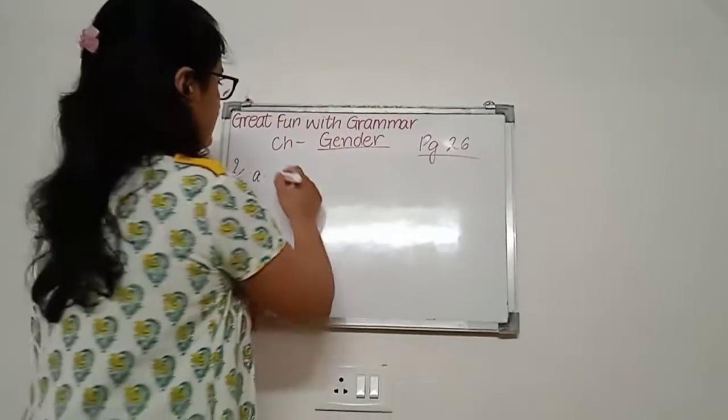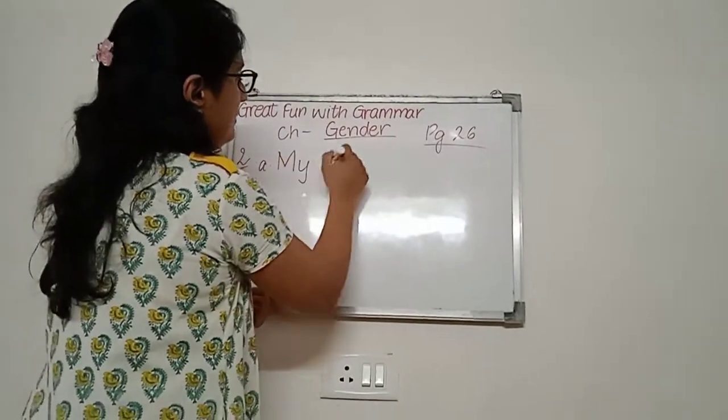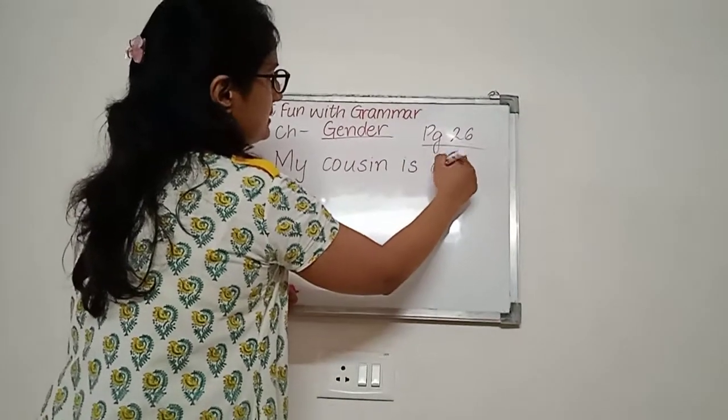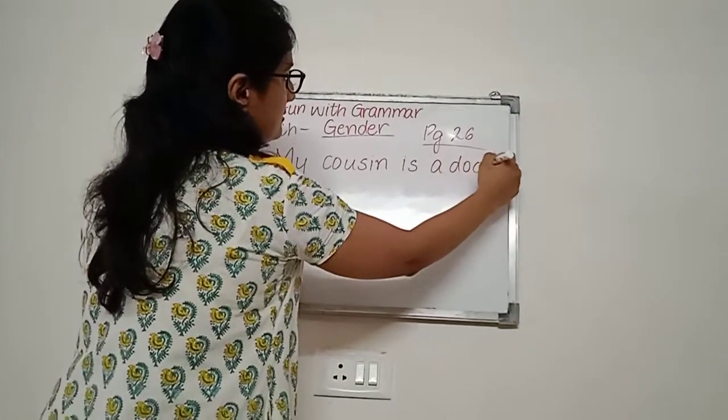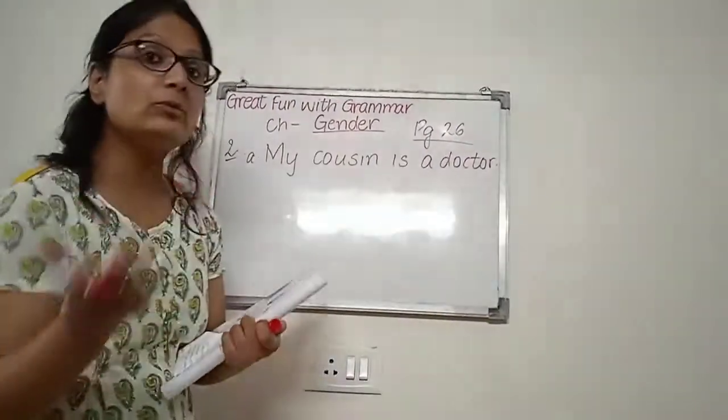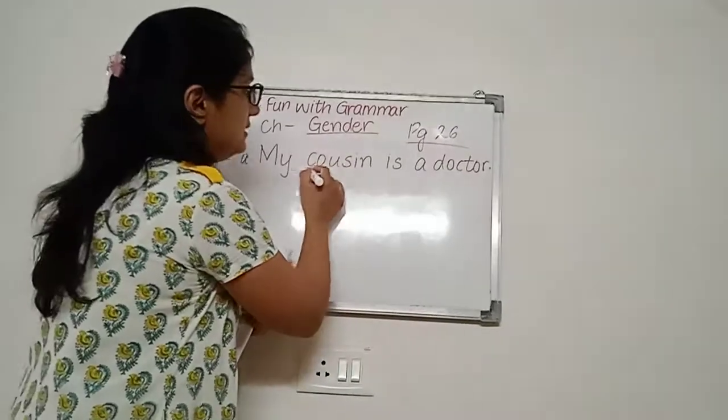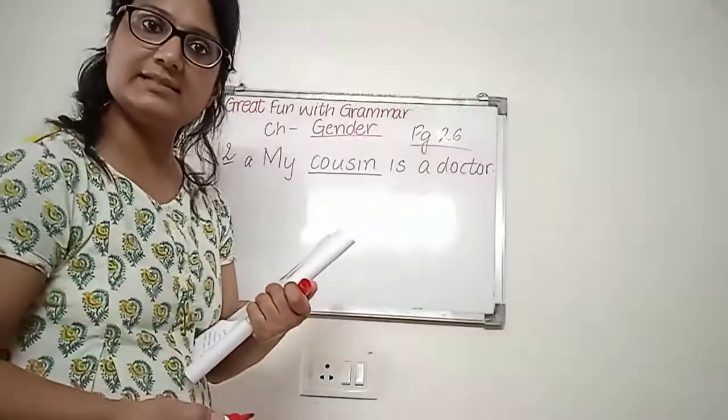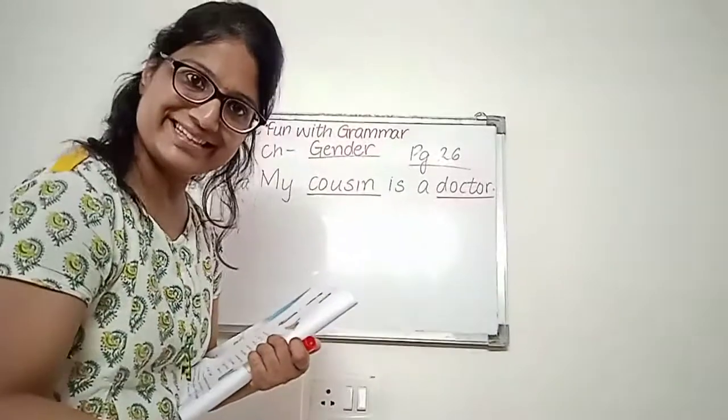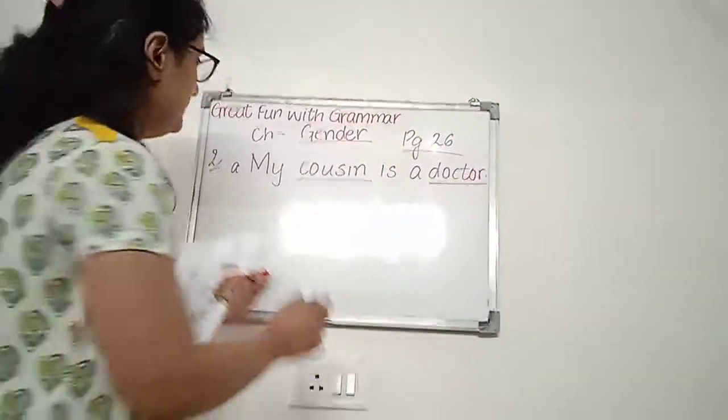Let me write down the first sentence. My cousin is a doctor. So, what are the nouns in this sentence? Cousin is the noun. Underline this thing. Doctor is a noun. Underline this thing. Very simple.